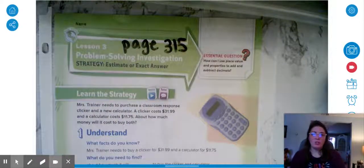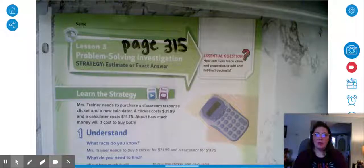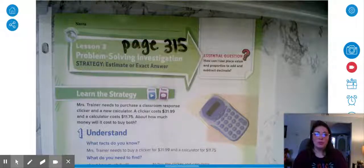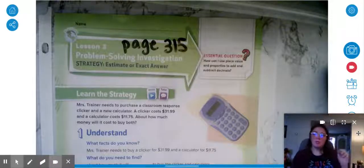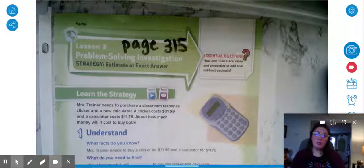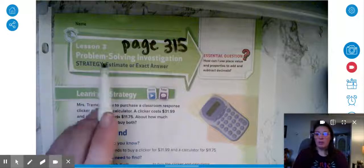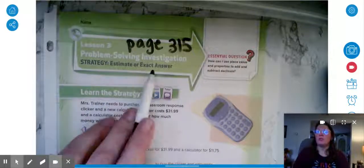So please go to your book on page 315 and I'm going to just very briefly show you our lesson for today. Today's lesson we're looking at problem solving and our strategy is determining if you need to estimate or give an exact answer.